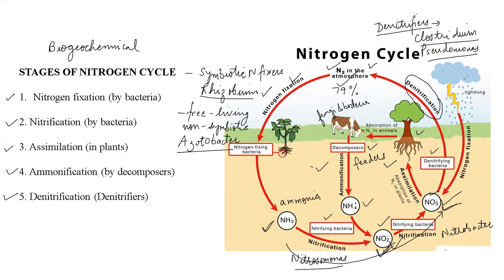On the right-hand side of this diagram, lightning is shown. Apart from nitrogen-fixing bacteria, lightning can also act as a source of nitrogen fixation. Lightning and thunderstorms can lead to the conversion of gaseous nitrogen into usable forms — specifically, lightning breaks down atmospheric nitrogen into nitrogen oxides, which are then utilized by plants, allowing assimilation to take place. This concludes our discussion of the nitrogen cycle. Thank you so much.